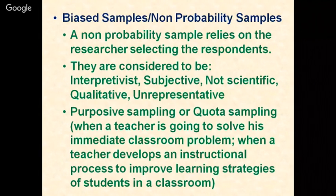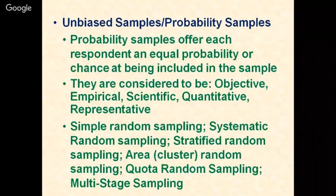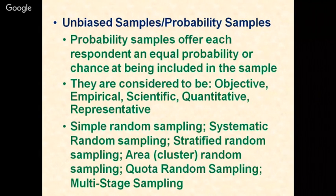Purposive or quota sampling is used when a teacher solves an immediate classroom problem — such as poor student ability or lack of attention — or when developing an instructional process to improve learning strategy. An unbiased or probability sample offers each respondent an equal probability or chance of being included. Techniques include the lottery method, randomized table method, systematic random sampling, and stratified random sampling. These are considered objective, empirical, scientific, quantitative, and representative.